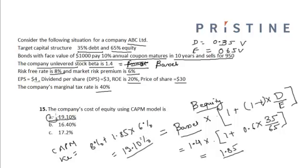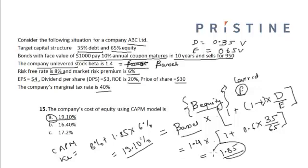The correct option is option A. Remember, we are using the levered beta (beta equity). The unlevered beta assumes no debt in the capital structure. With the addition of debt, the riskiness for equity holders increases, which is reflected in the higher levered beta of 1.85. Using this in the CAPM gives a cost of equity of 19.10%.